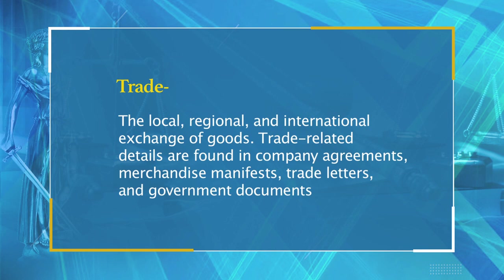Trade-related details are found in company agreements, merchandise manifestos, trade letters and government documents. At a number of archaeological sites, items from different distant areas have been discovered. Many items which were produced either by surface or in the workshops of temples or palaces served as the medium of barter for the importation of metal, stone, lumber, spices and even fragrances. Essentially, trade took place between foreign towns and other trading outposts.